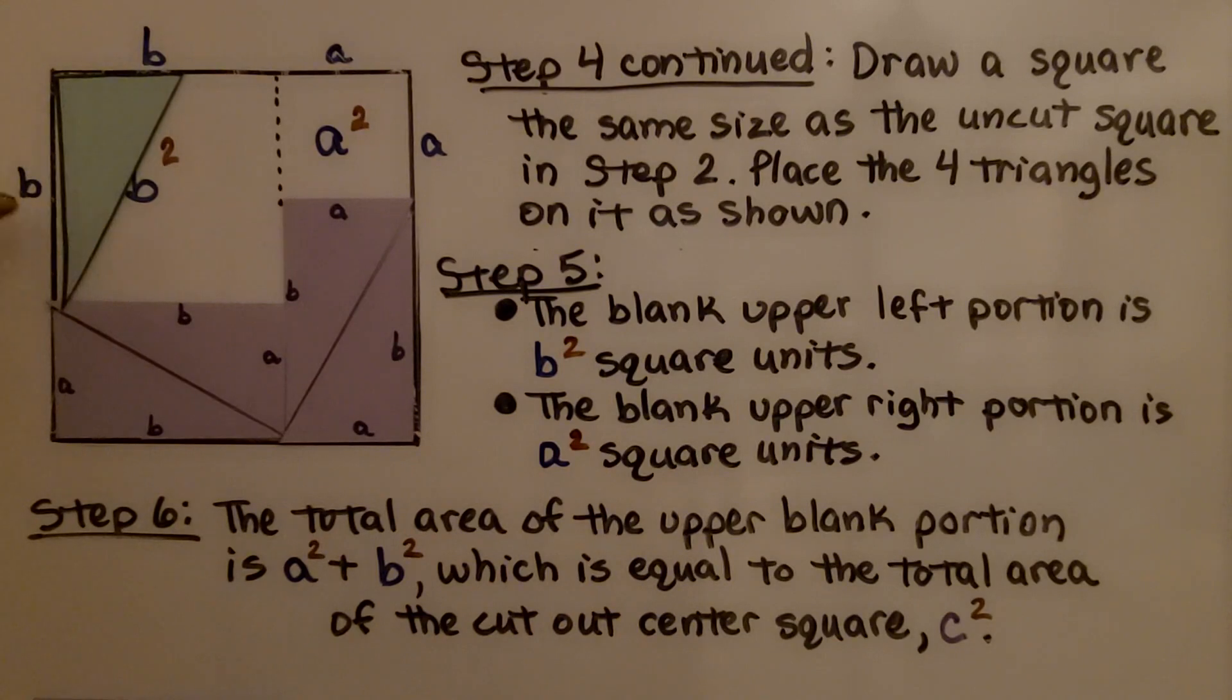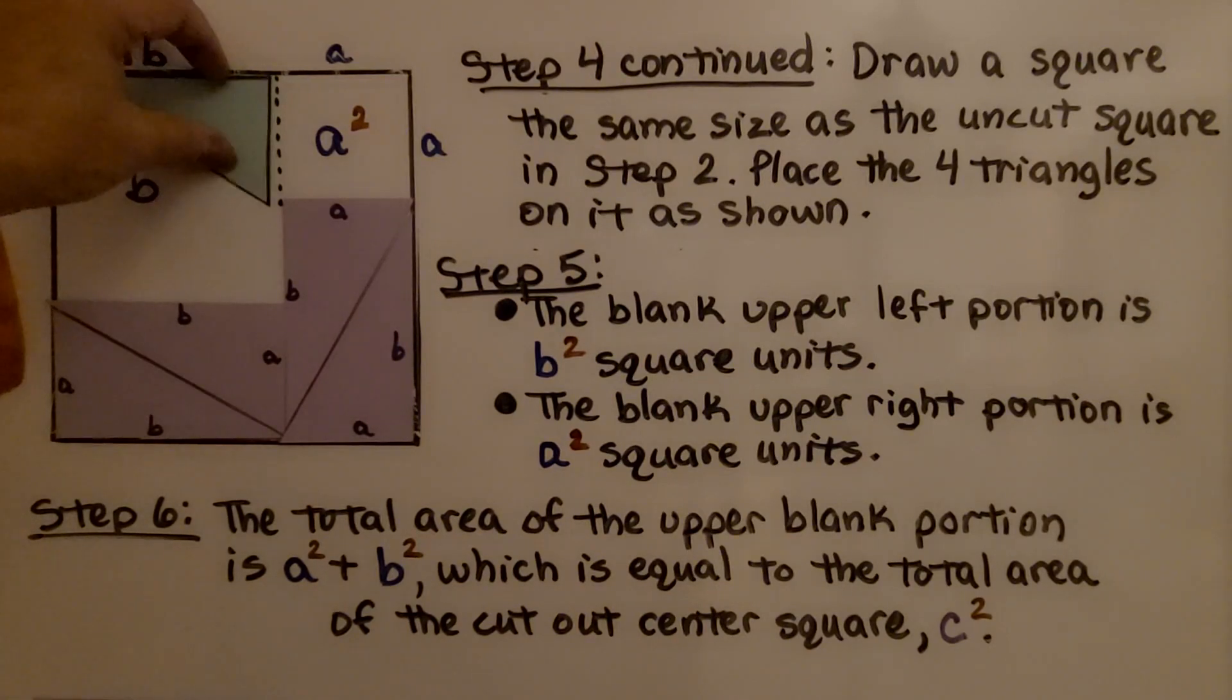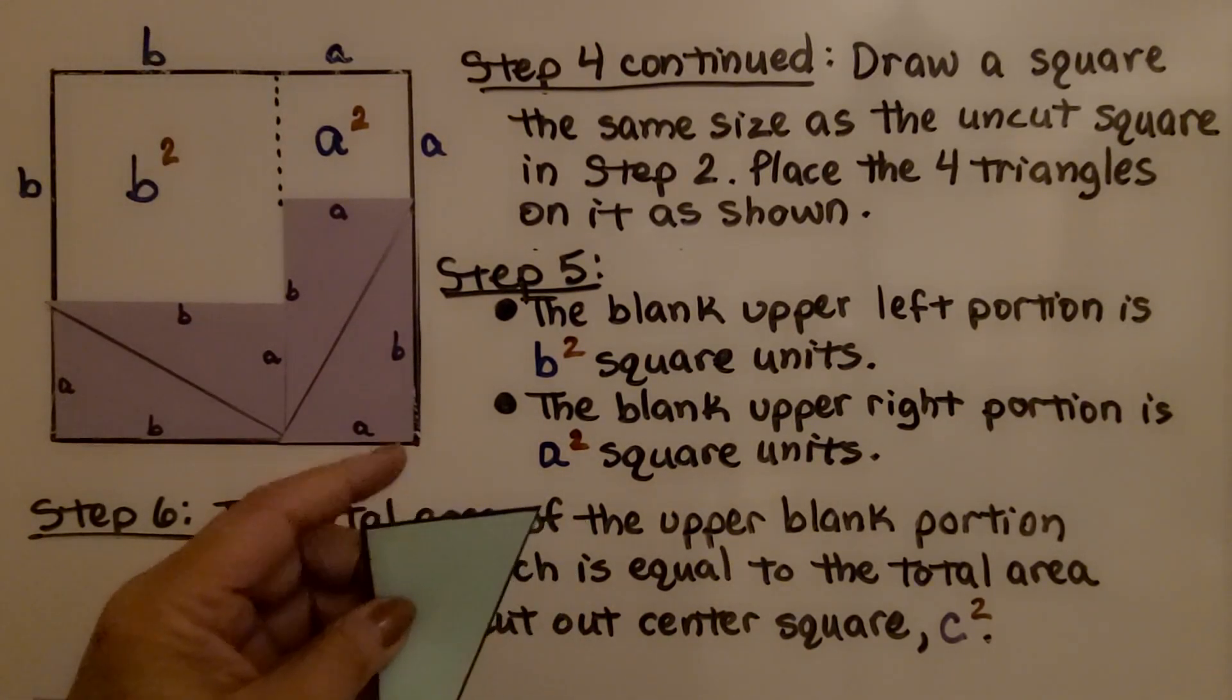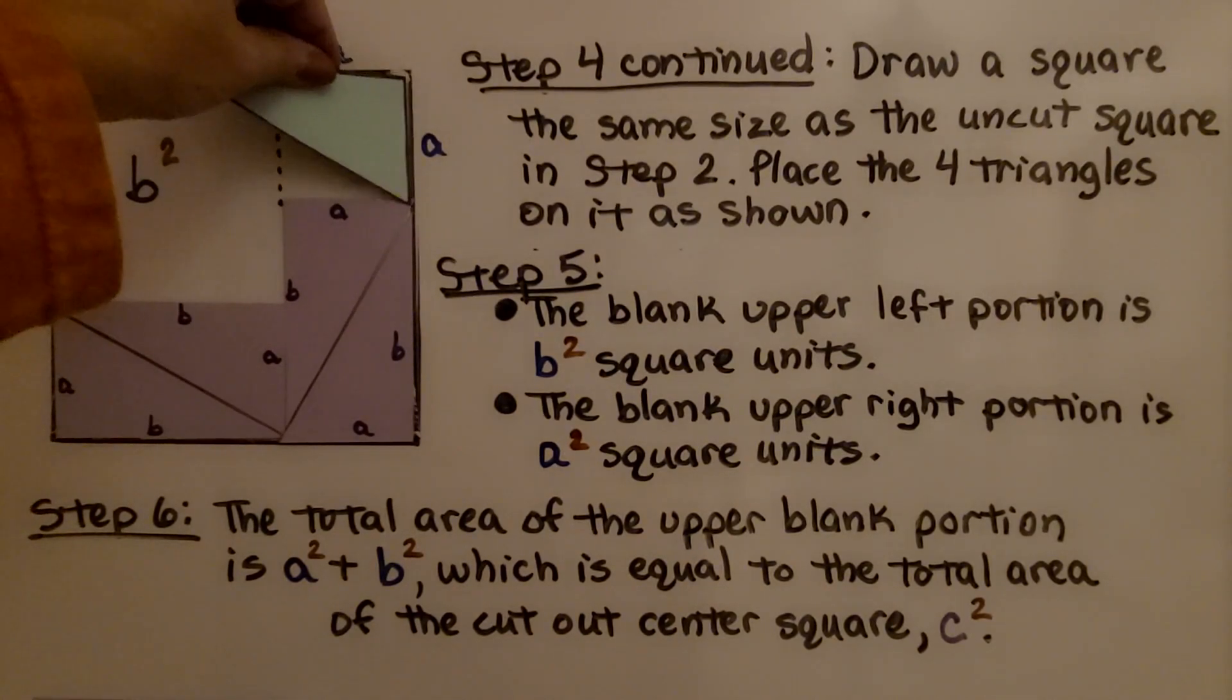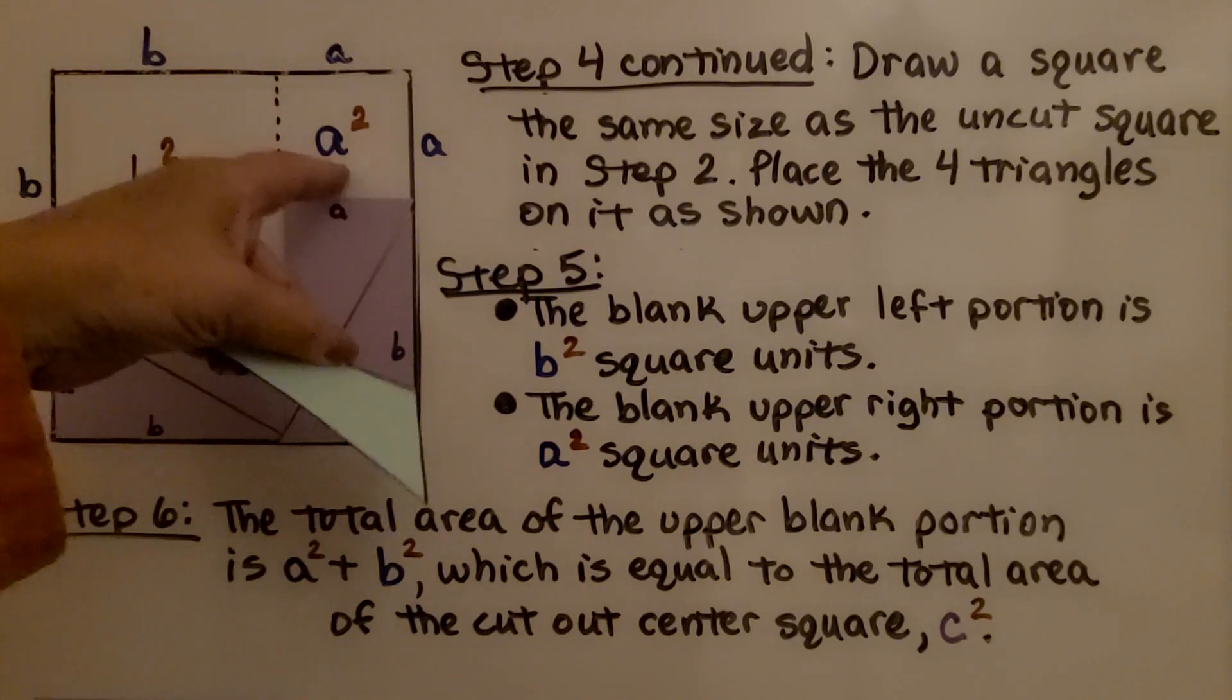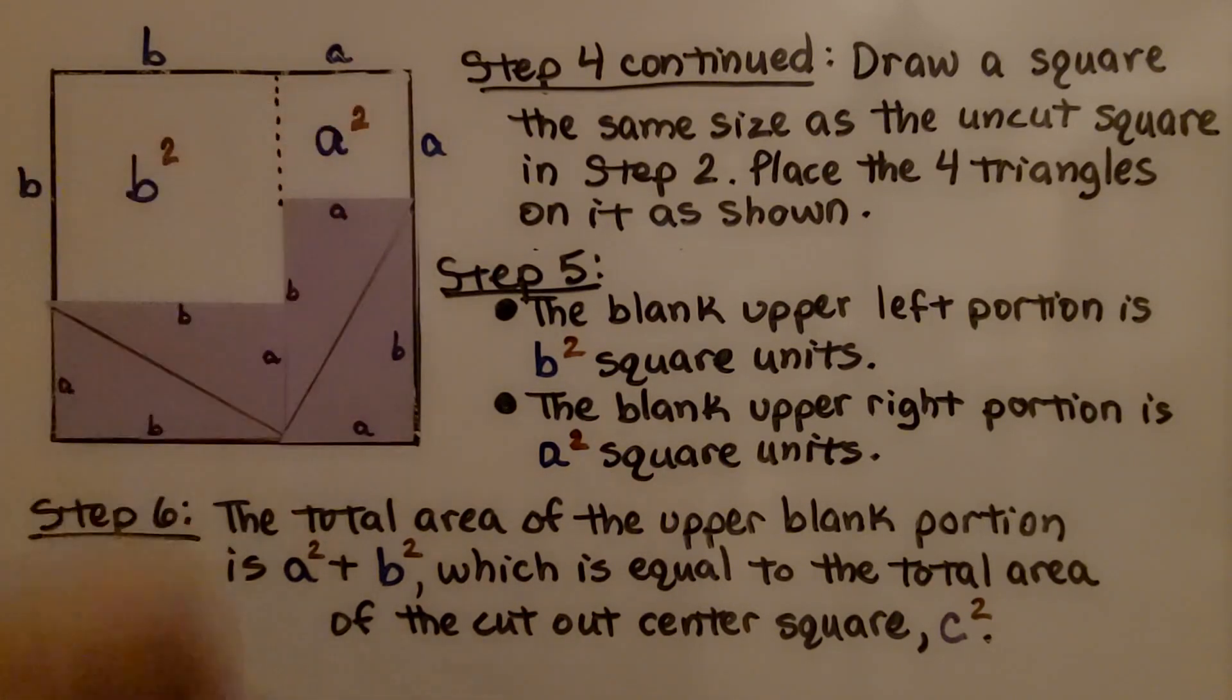So we have b squared, and we know this short side is a. If we put it here, we've got this square's side is a, and this one is a. So this is a squared. So this is b squared in area, and this is a squared in area.